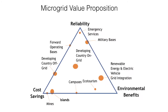Microgrid value proposition has three main factors: reliability, cost saving, and environmental benefits. These apply to different segments like military bases, emerging services, renewable energy, and electric vehicle integration. For cost saving, mines and islands are key examples.